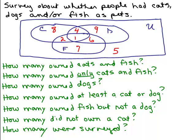Here we have the results of a survey about whether people had cats, dogs, and/or fish as pets, and this information is in a three-set Venn diagram. The circle with C represents people that have cats. The 8 represents people who only had a cat — no dogs or fish. The 1 in the middle is the intersection of cats, dogs, and fish — only one person had all three animals. People on the outside didn't have any pets.